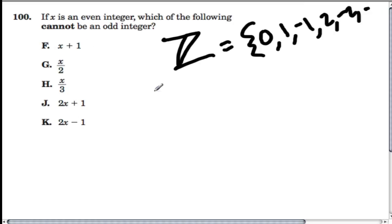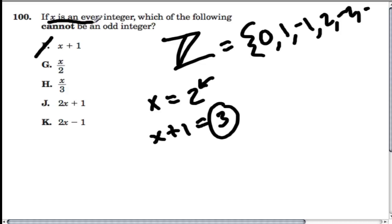F doesn't work because if I plug in X is even, part F says let's say X is two. Then X plus one is three, and that's odd. So we plugged in an even and we got an odd. We don't want that. They want to know which of the following cannot be an odd when you plug in X as an even integer.